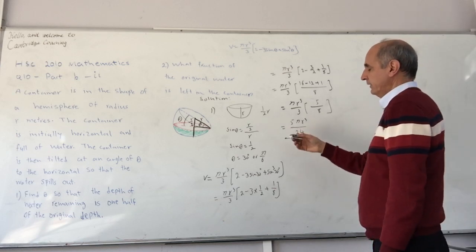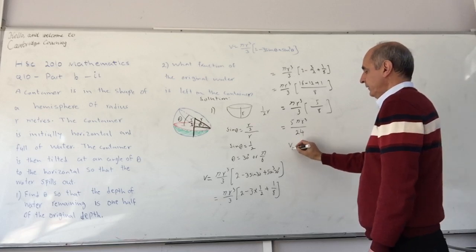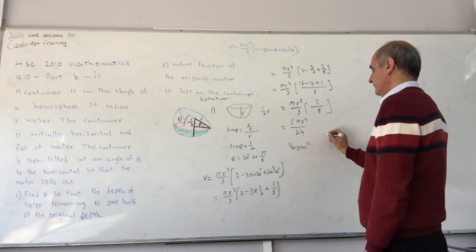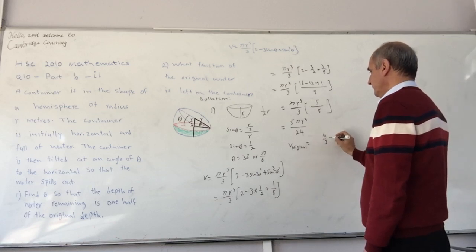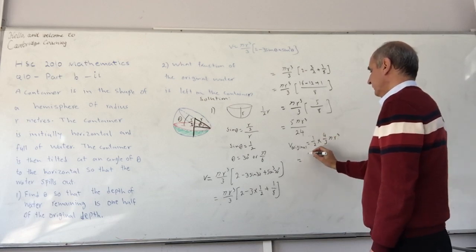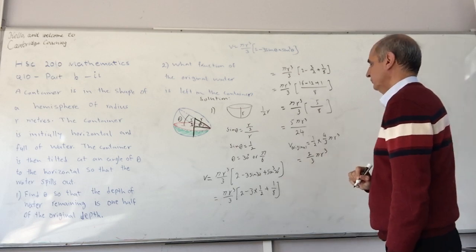But the original volume was half of the volume of a sphere. Volume of a sphere is 4 on 3 pi r cubed, but we have half of that, so that becomes 2 third pi r cubed.